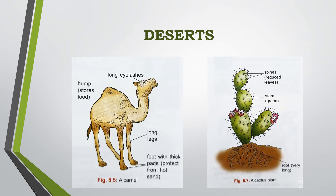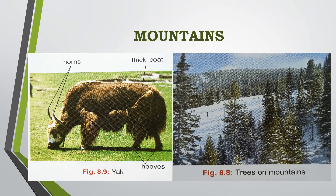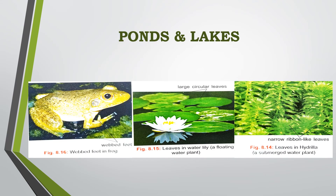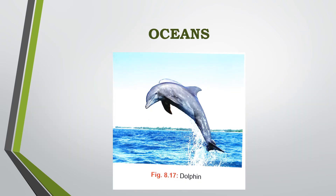Camel and cactus are found in the deserts. Yak and the conical shaped trees are found in the mountains. Lion and deer are found in the grassland. Animals like frog and plants like water lily and hydrilla are found in the ponds and lakes. Dolphins are found in the oceans.